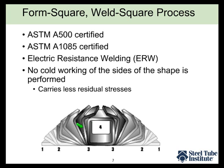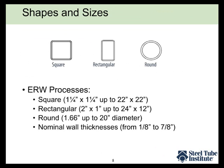In this process there is no cold working of the sides of the shape — the sides start straight and remain straight — so there is less cold working overall and it carries less residual stress compared to the weld round form square process. For these two ERW methods, there are limits to the sizes that can be produced: for squares, the range shown here goes from 1¼ inch square up to 22 inch square.